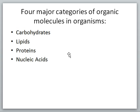Okay, the four major categories of organic compounds in organisms are carbohydrates, lipids, proteins, and nucleic acids. We're going to go through examples of each one of these. So let's go ahead and stop this video at this point, and we'll pick up with carbohydrates in the next video.